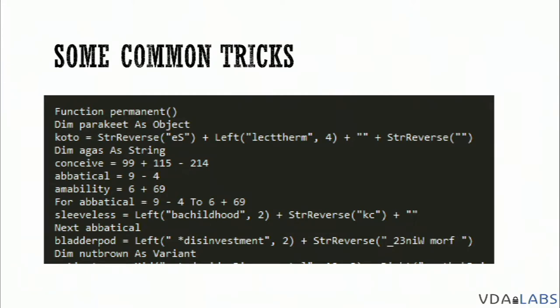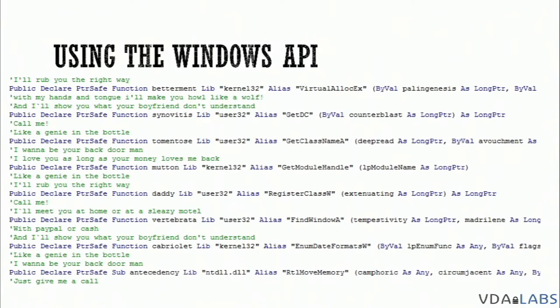The last thing on this one — 'bladder pot,' which is a great variable name — is actually a legitimate string. Looking at the content, it's just the reverse of 'from win32,' and there's a substring 'select star,' so it's going to be 'from win32 select *.' That's the only legitimate string here, so we could identify that variable and start tracing it through the macros.